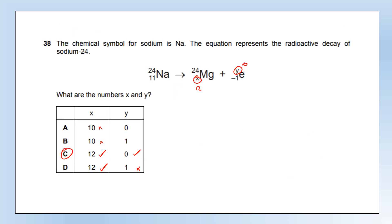The chemical symbol for sodium is Na. The equation represents the radioactive decay of sodium-24. This produces electrons, so it's beta decay. In beta decay, the proton number increases by one, and an electron has no mass number since it's not made of protons or neutrons. So X = 12 and Y = 0, which is option C.